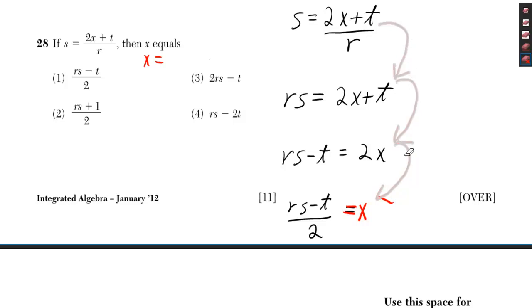How can you get through those steps? Well, you need to get rid of the divide by r. How do you get rid of a divide by r? You do the opposite, you do times r. So I need to do times r on both sides. That gives me rs, and on the right side, the rs cancel.